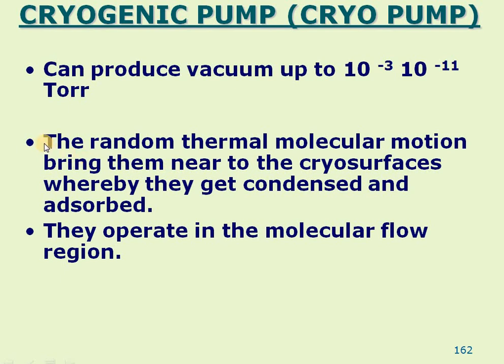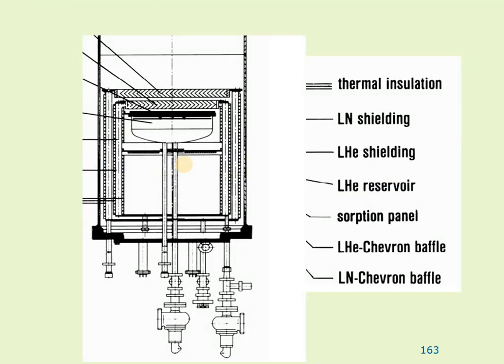The basic physical mechanism is random thermal molecular motion bringing gas molecules near the cold surfaces, where they get condensed and adsorbed — physical adsorption involving Van der Waals forces — in the molecular flow region. This is an advanced, sophisticated type of pump. Prior to operating a cryogenic pump, you must first run a rotary pump to achieve a minimum rough vacuum of around 10⁻³ Torr, then switch on the cryogenic pump.